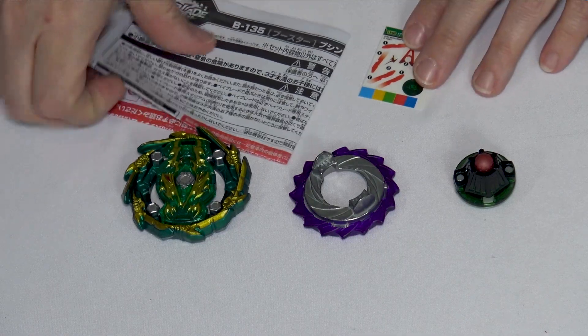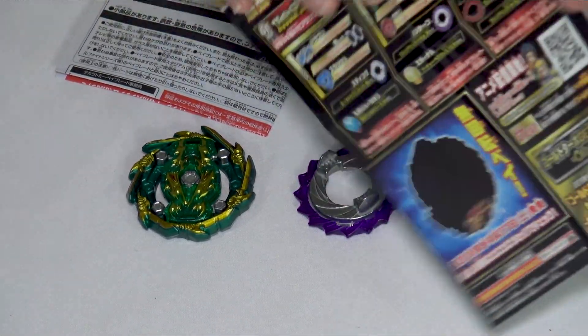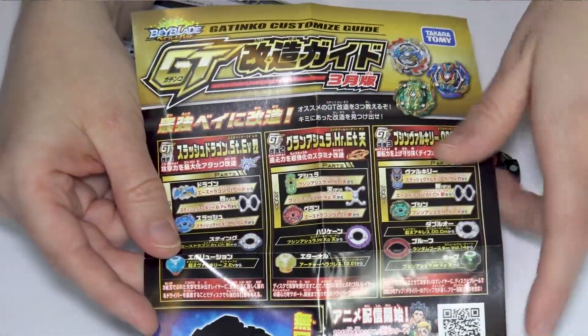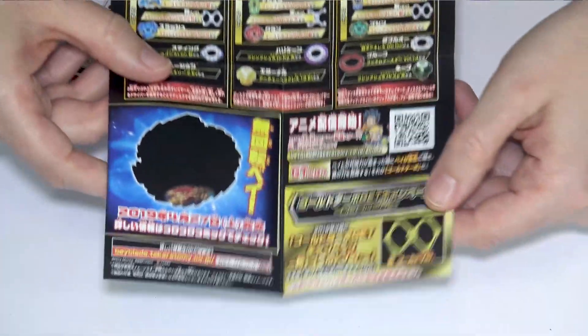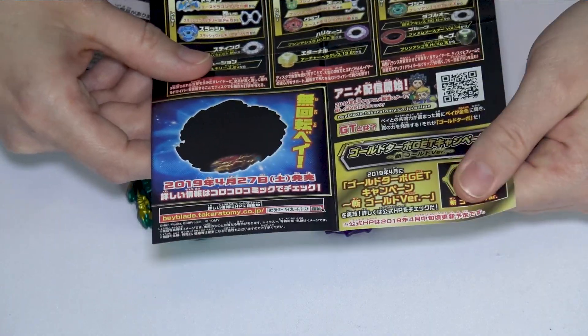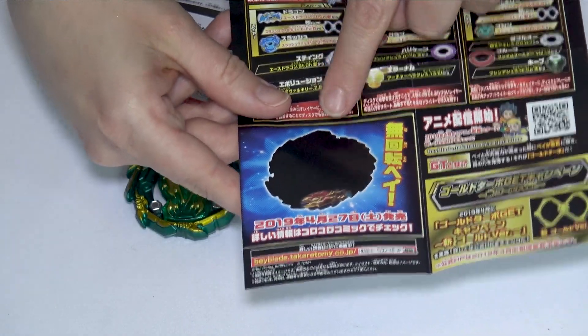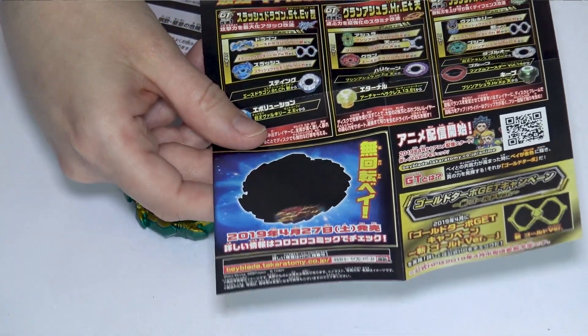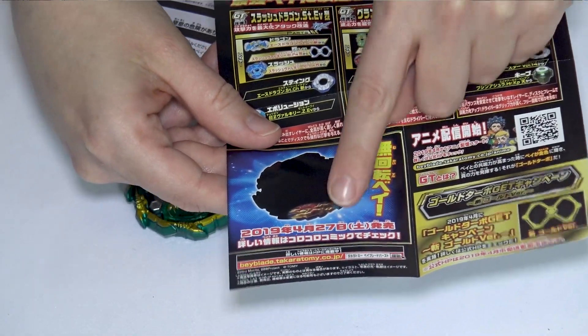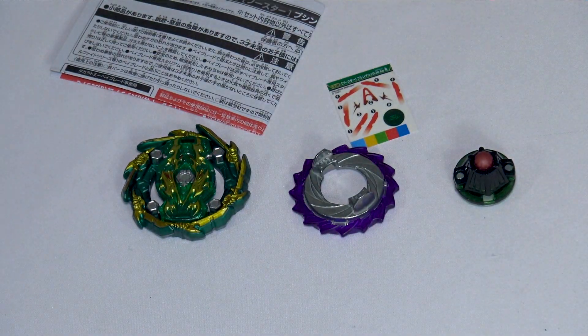It's all out now. We got the directions, the stickers. We didn't look at this insert when we opened Slash Valkyrie, but it's the same one that came with all of them. It goes over different combos you could use with these guys, and this really cool gold weight that you can get. I guess they're Koro Koro. This is the back that everybody's expecting to come out for GT. Looks like April 27th, I think.